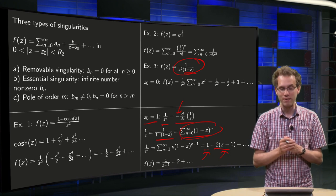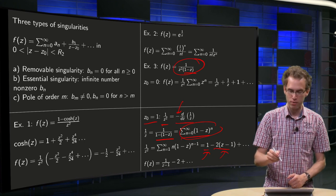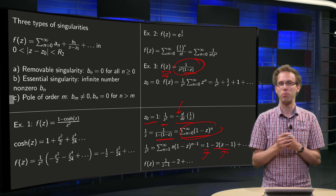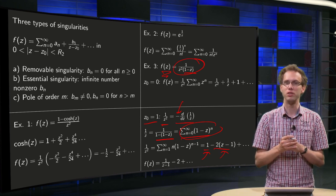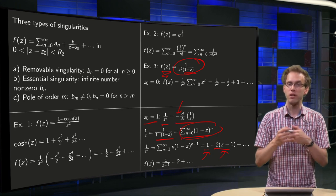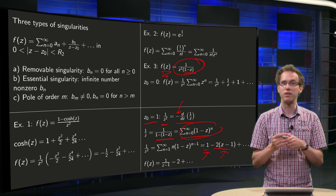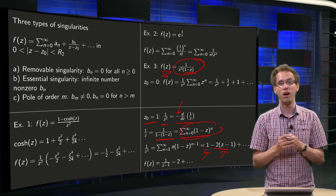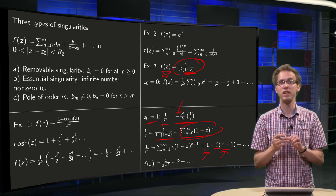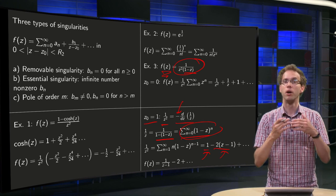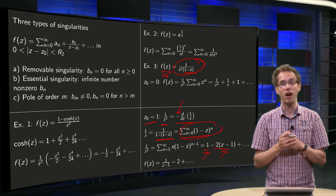You could already have guessed the order of the poles from the original f(z) by looking at the function. We will take a closer look at that later, so that you don't need a full Laurent series in this case. But if you use the full Laurent series, you can always determine what type of singularity you have.